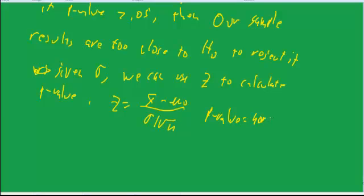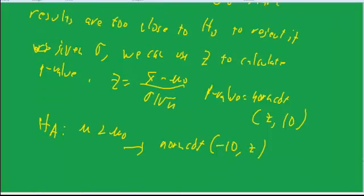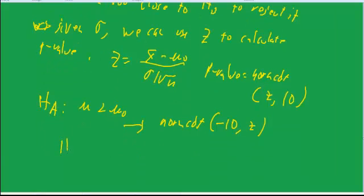If the alternative hypothesis is mu is less than mu-naught, then we take normcdf from negative 10 to Z. And if it's two-sided, we take whichever value is smallest from these things and double it.